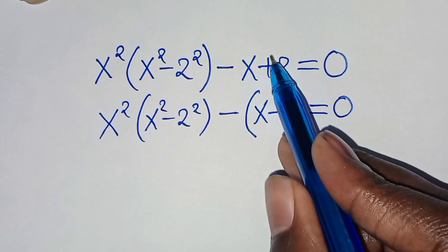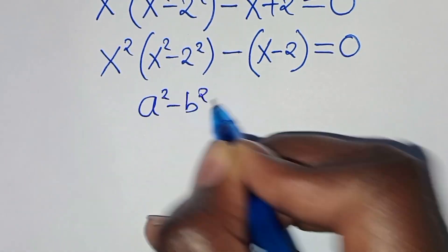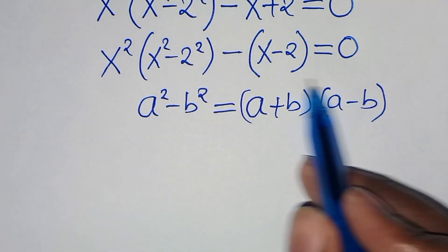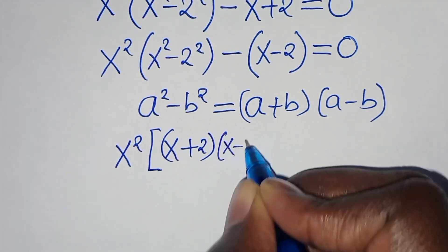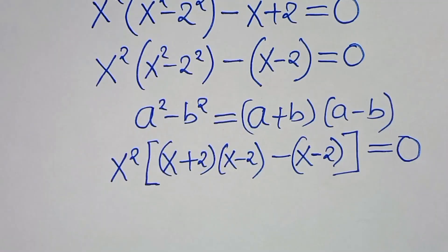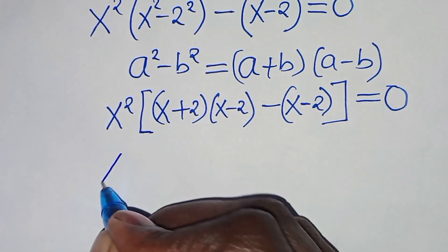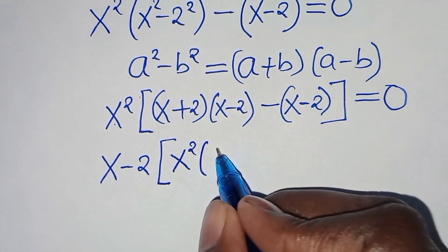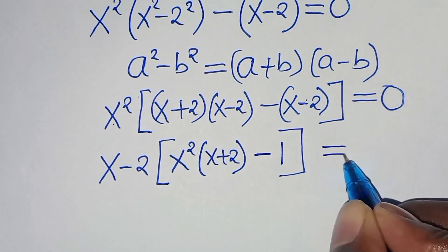You see, minus times minus 2 here is the same thing as plus 2. So we have x squared minus 2 squared, which is in the form of a squared minus b squared, which we can express as a plus b, times a minus b. Applying this identity, we have x squared into the parentheses, x plus 2, x minus 2, then subtract x minus 2, close the parentheses, this is equal to 0.